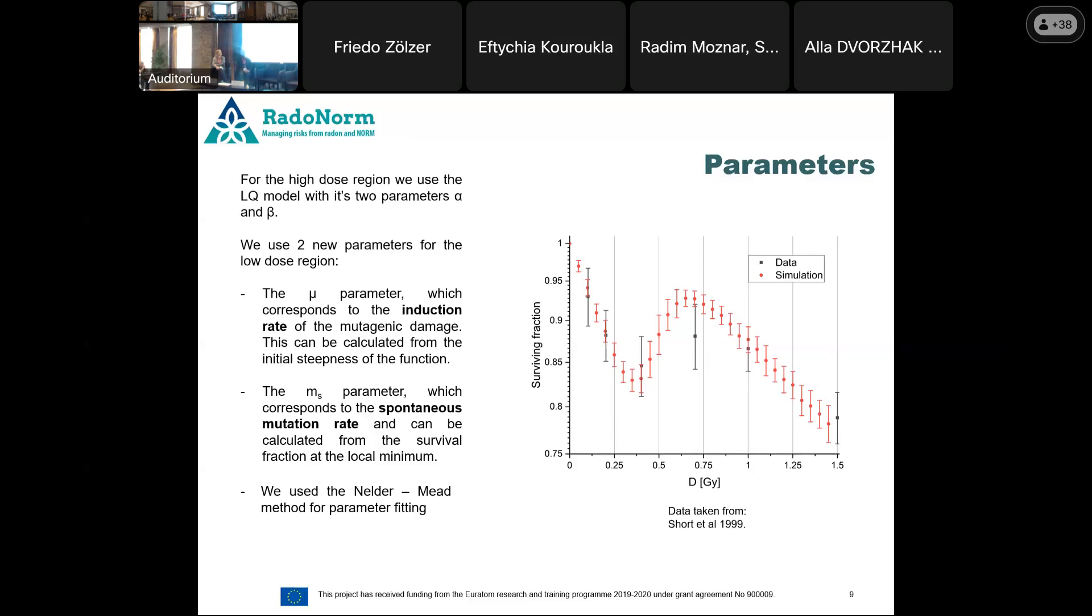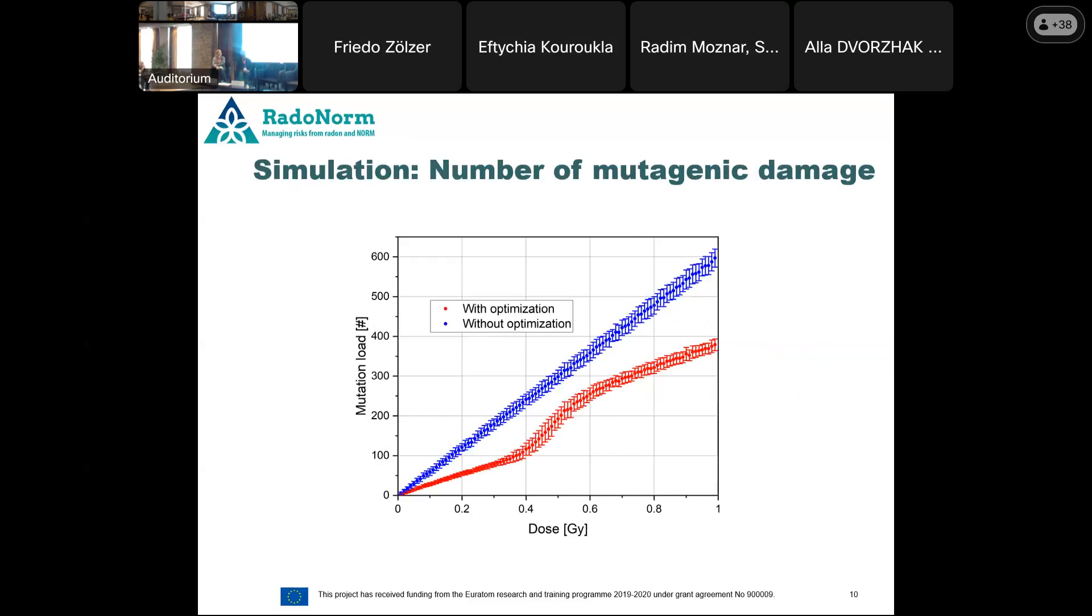So if I am looking at the number of mutagenic damage, then I can see that without this optimization, if I increase the dose, the mutations increase linearly. That's what we expect. But if I use this kind of optimization, then I can see that this linear increase is actually decreased at the induced resistance part. But it just changes shape to that one of the case without optimization. So we have less mutagenic damage.